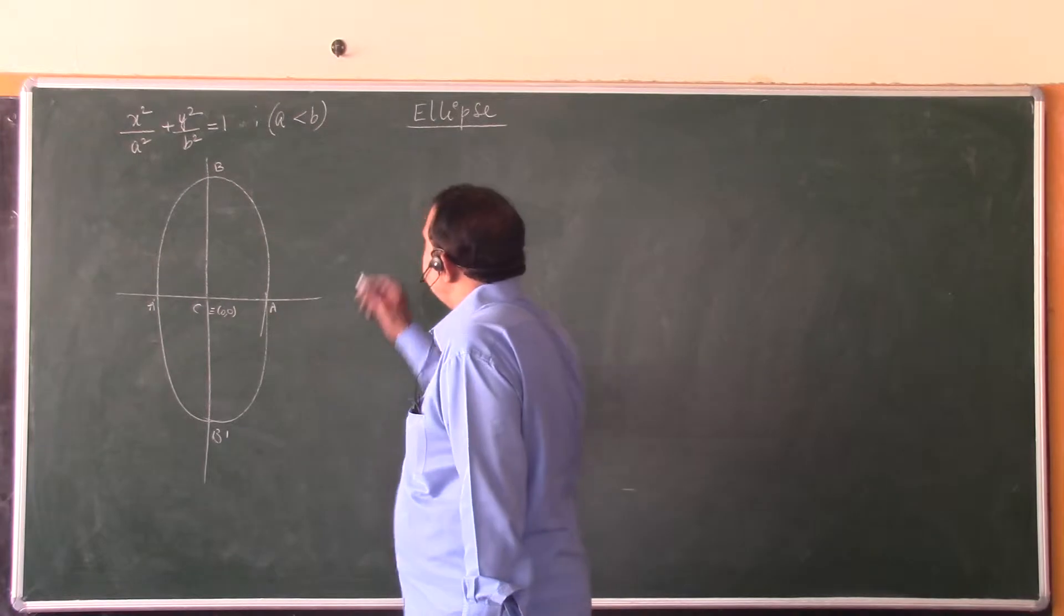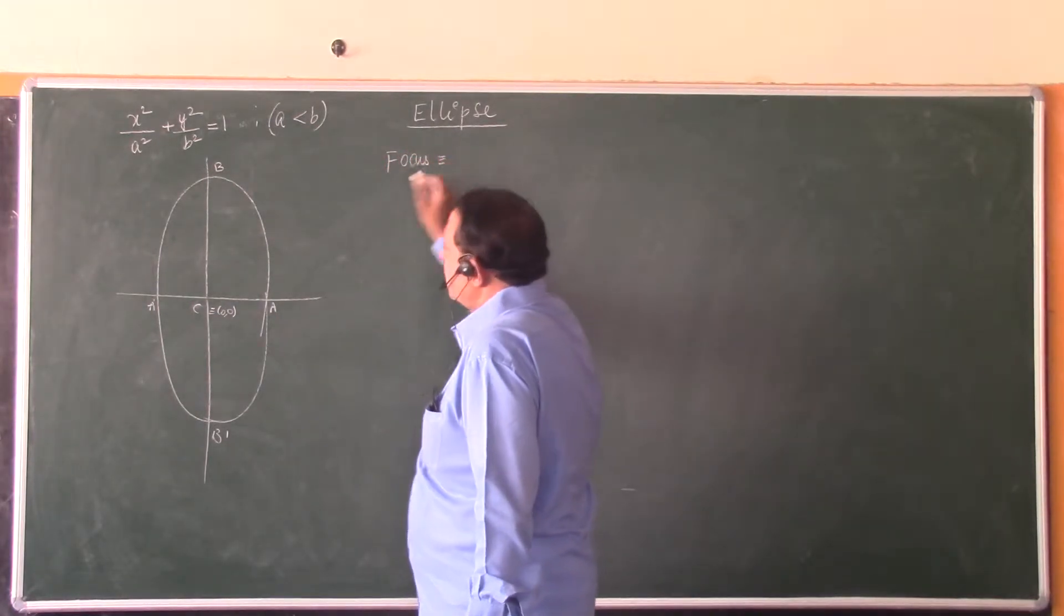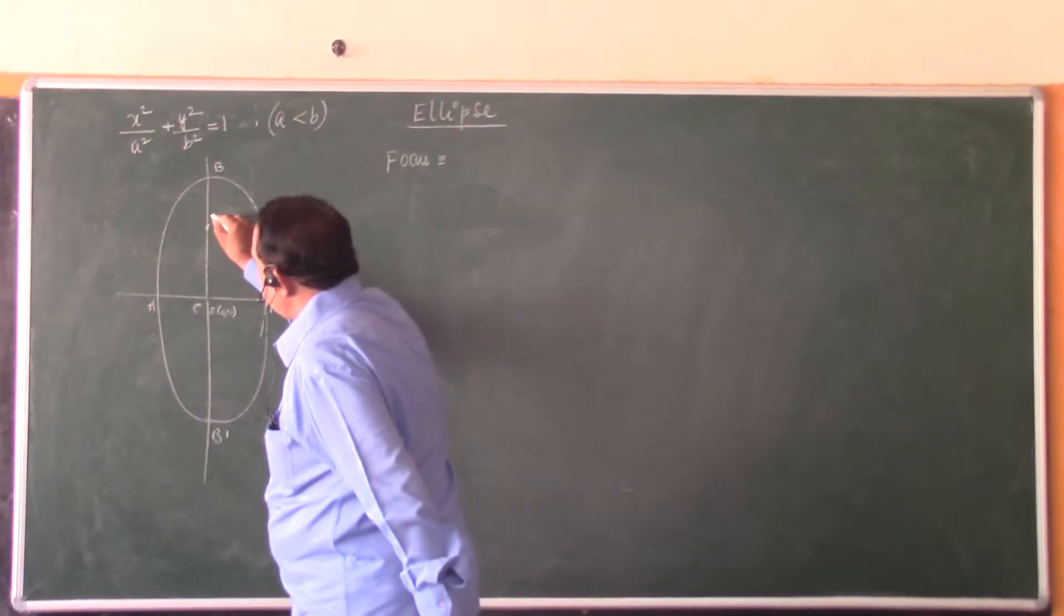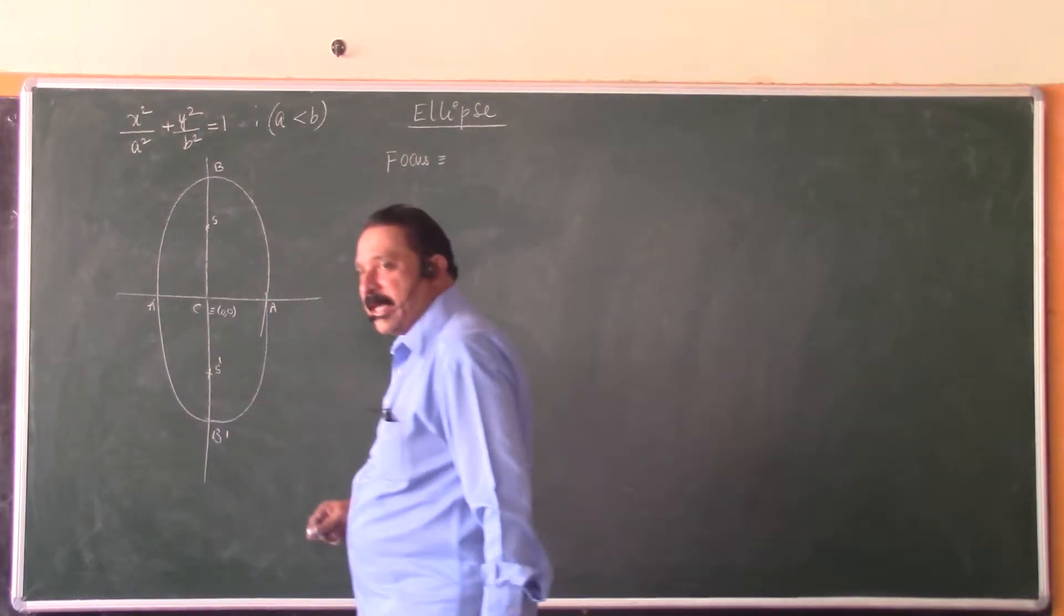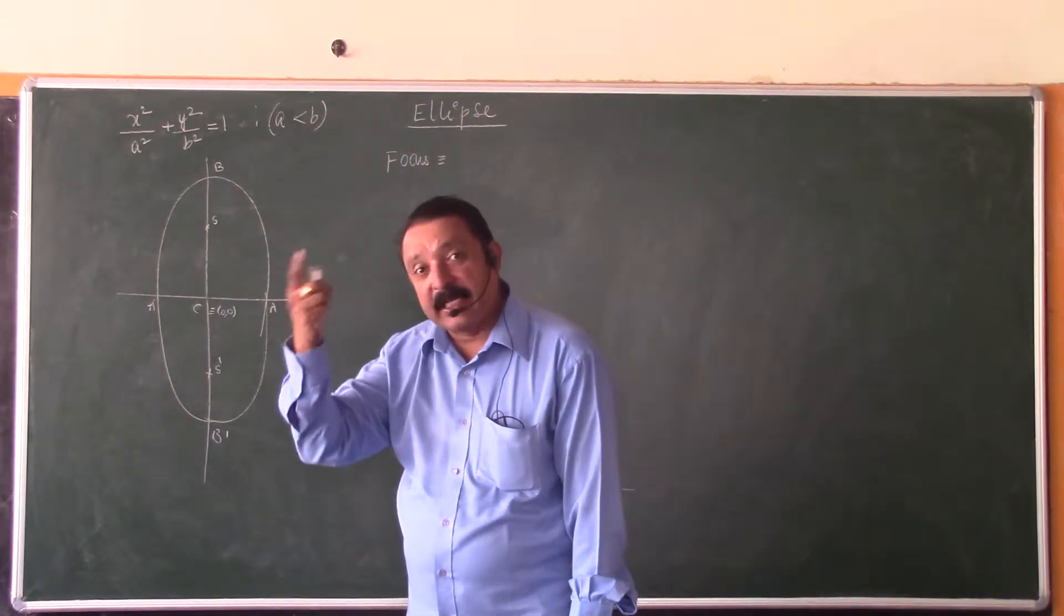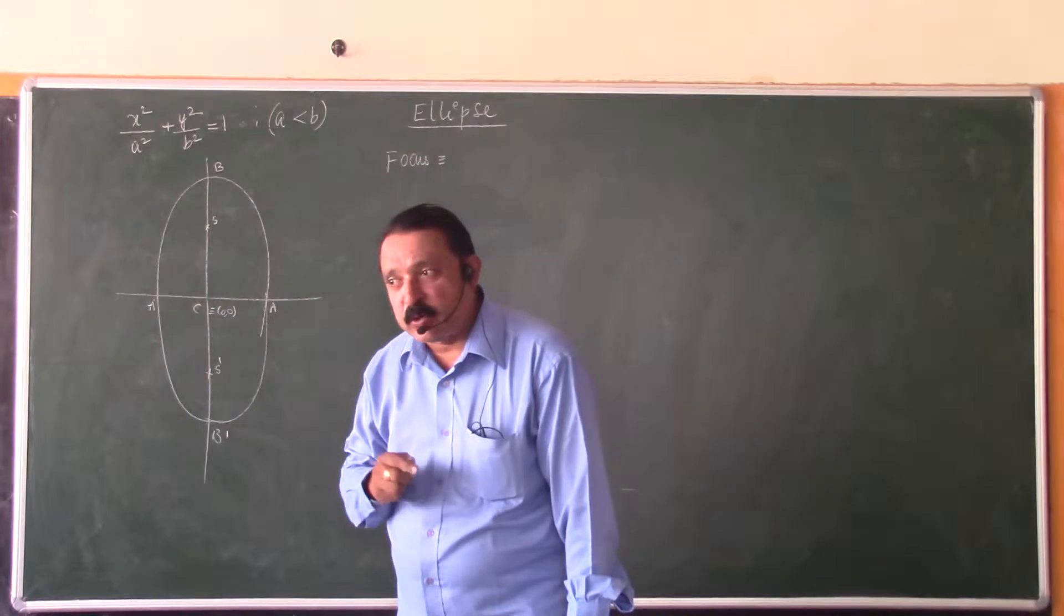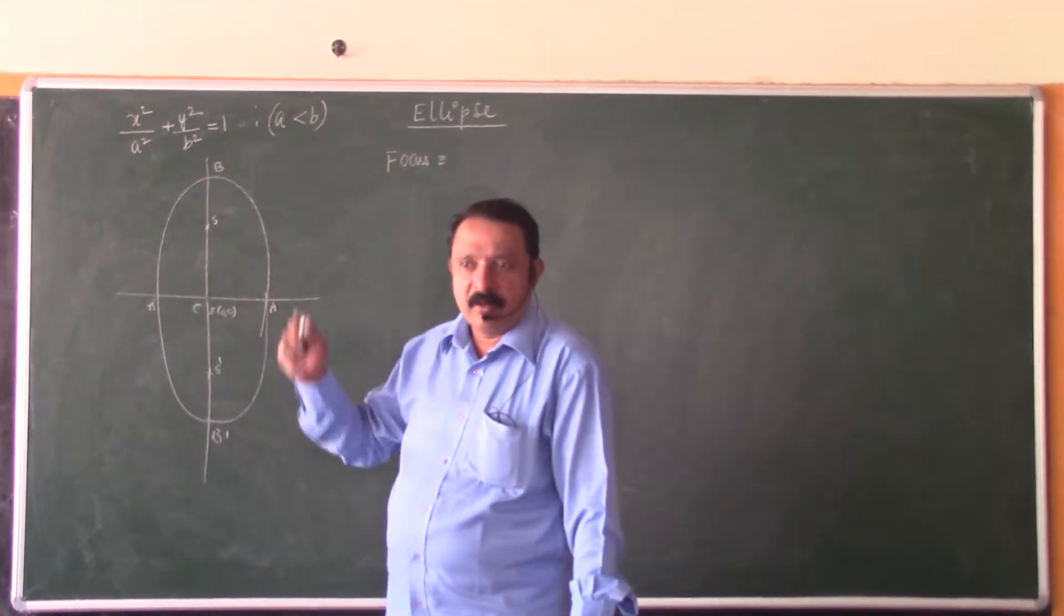For example, if you want to write the focus, one focus will come on the y-axis and other focus will come on the y-axis downwards. In the previous case, if a is greater than b, where did you locate the foci? On x-axis. Now it will come on y-axis.